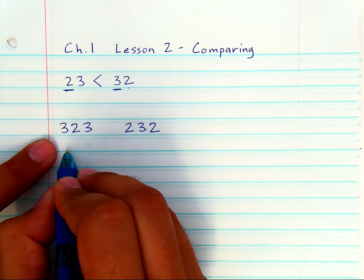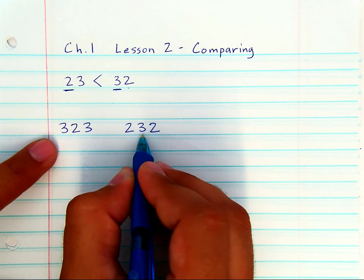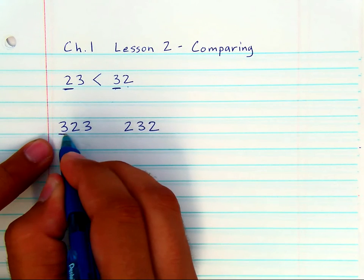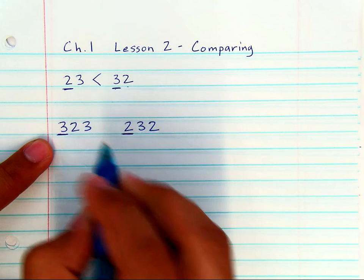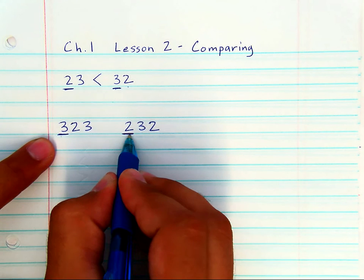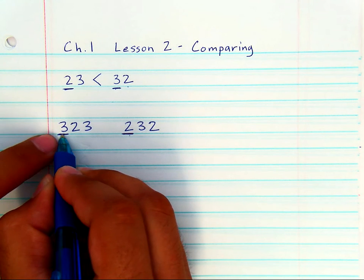Which number is bigger? Well, you're not going to start from the tens. You're always going to start from the largest matching place value. So, here, the hundreds place is clearly larger on this side.